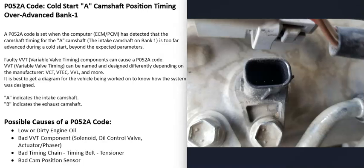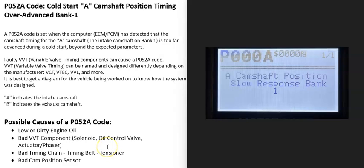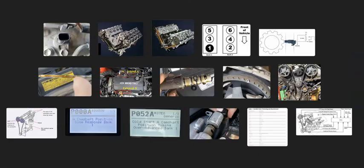The last possible cause is a bad camshaft position sensor. With just this P052A code alone, it's not the most common cause, but it is possible that the sensor has gone bad and is reporting incorrect information to the computer. Usually when the camshaft position sensor fails, you'll also get another code like a P000A — camshaft position slow response bank one. If you have both that code and the P052A, it's a good idea to test the camshaft position sensor to confirm it's working correctly.